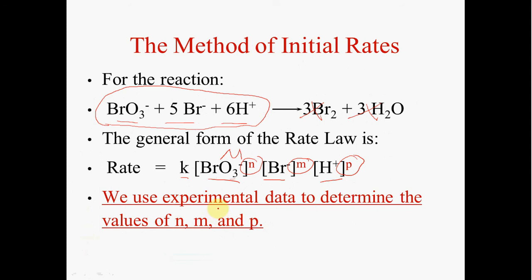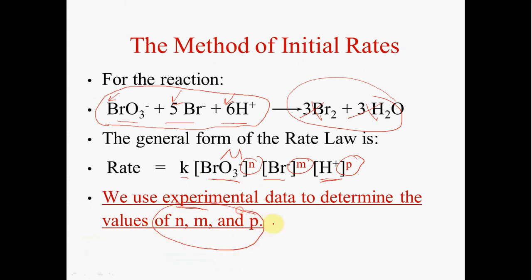We cannot use the balanced equation — the stoichiometric coefficients don't tell us how the collisions between the bromate ion, bromide ion, and hydrogen ion occur, nor how each ion affects the formation of products. That has to be done experimentally, and then we use that experimental data to determine what are called the orders of the reaction.